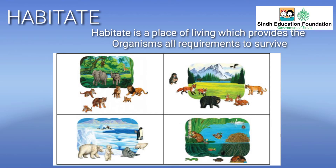In the following pictures you can see some places of living. This is Habitat. Habitat is a place of living which provides the organisms all requirements to survive. Habitat is made up of physical factors such as soil, air, temperature, or biotic factors like producers, consumers and decomposers.